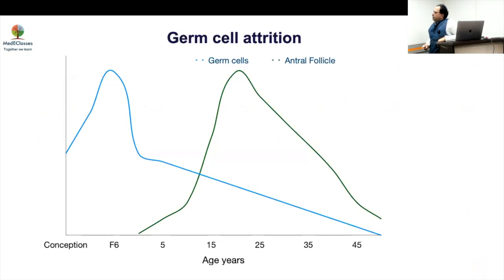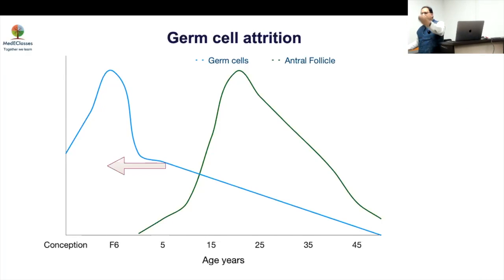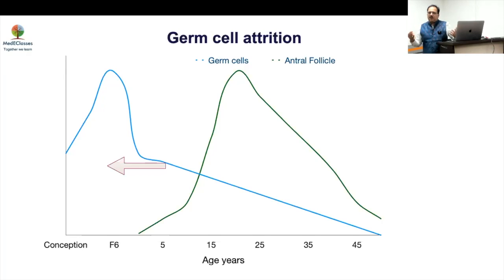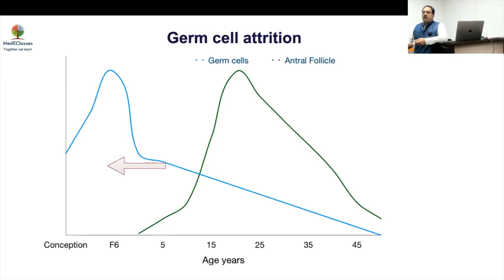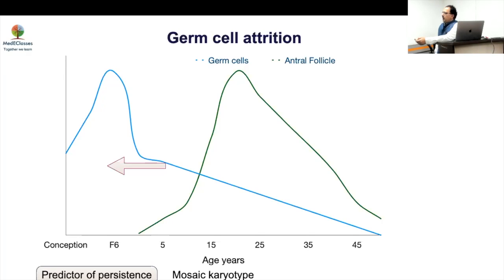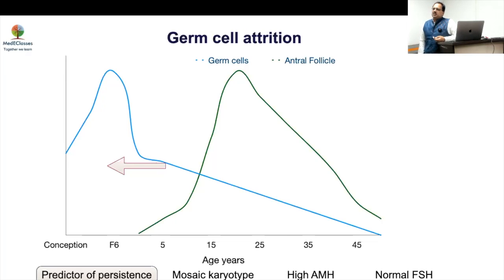By the time a Turner girl presents clinically, many will have already lost their ovarian function. However, if more FMR1 and BMP15 are expressed, or if there is a mosaic form, or if only part of the X is affected, ovarian function may be preserved. Although classic Turner syndrome rarely progresses through puberty, a reasonable number of non-classic mosaic Turner girls will enter puberty spontaneously. If AMH is detectable and FSH is not elevated, there is a chance of normal pubertal development.